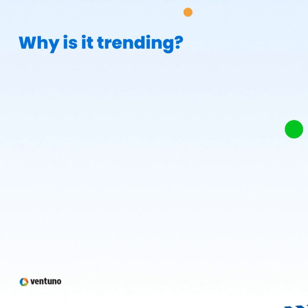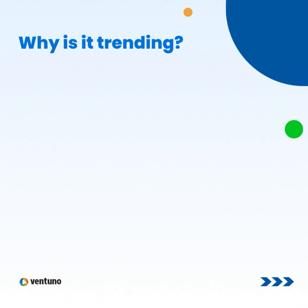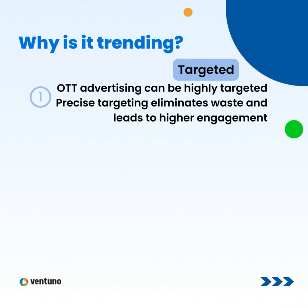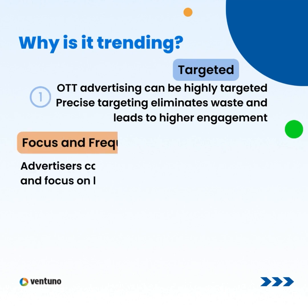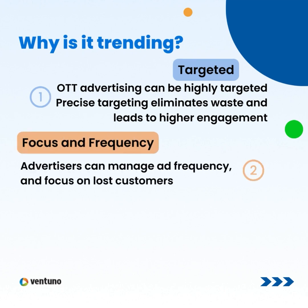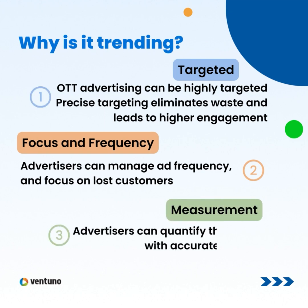OTT advertising is gaining traction because it can be highly targeted. Precise targeting eliminates waste and leads to higher engagement. Moreover, advertisers can manage ad frequency and focus on lost customers. They can also quantify their reach with accurate tracking.